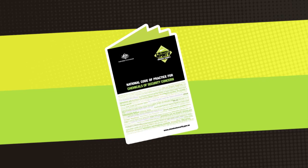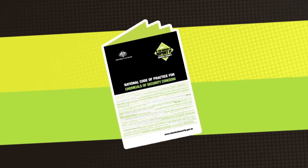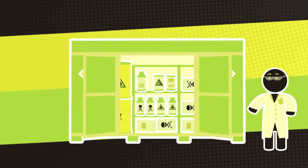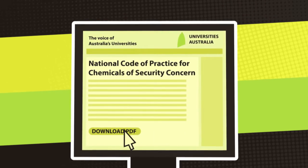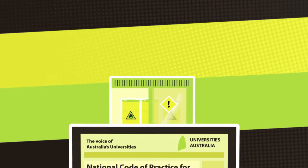The National Code of Practice for Chemicals of Security Concern provides guidance on practical measures you can take to help keep chemicals secure in your laboratory. The Universities of Australia website has additional guidance designed for compliance managers and laboratory supervisors.